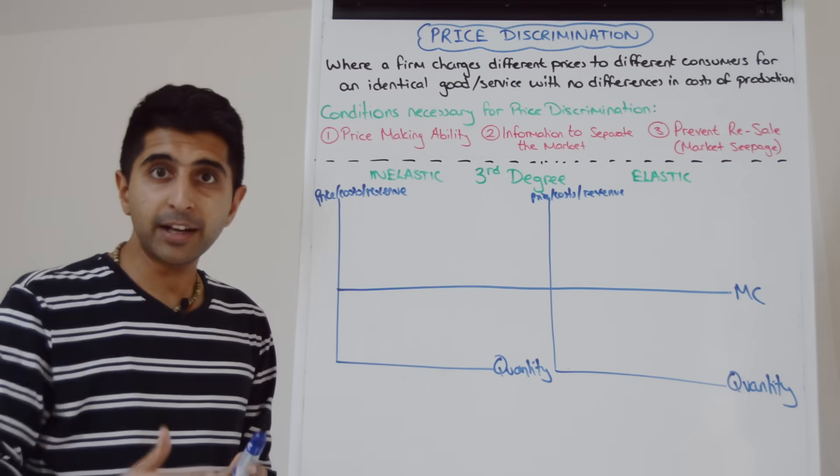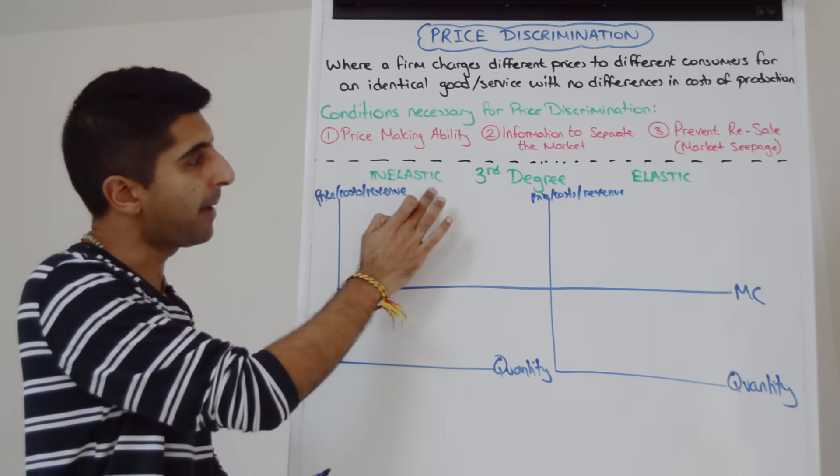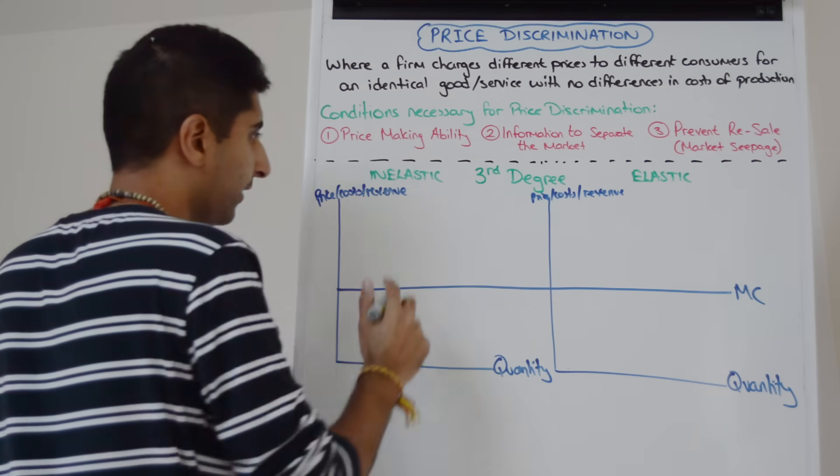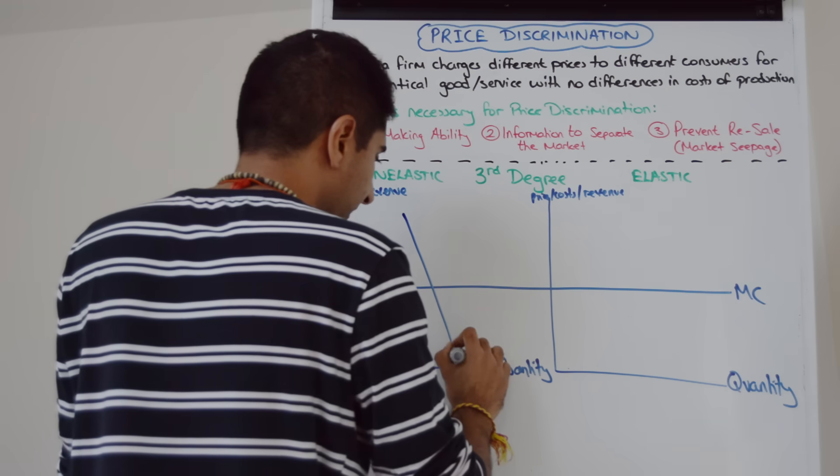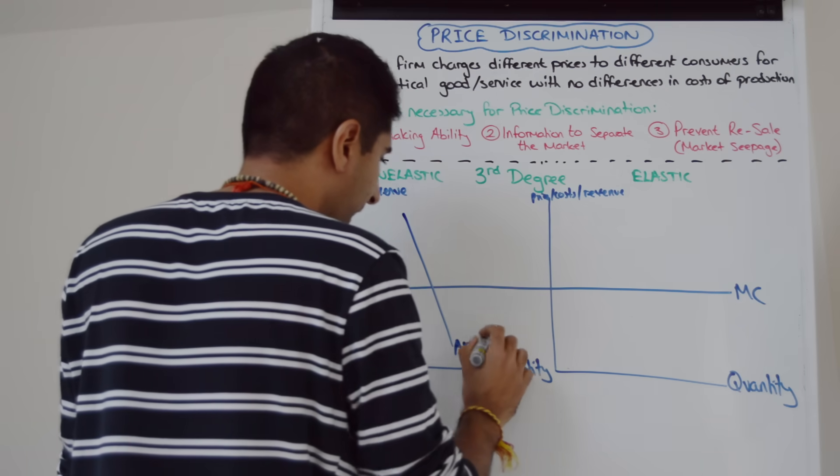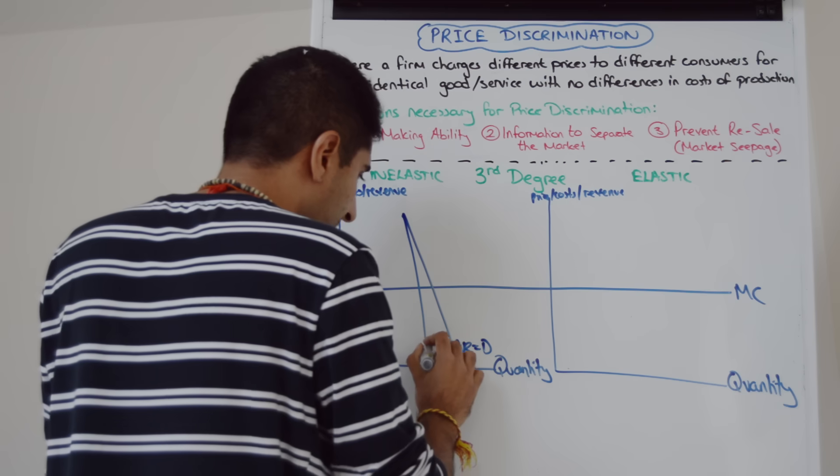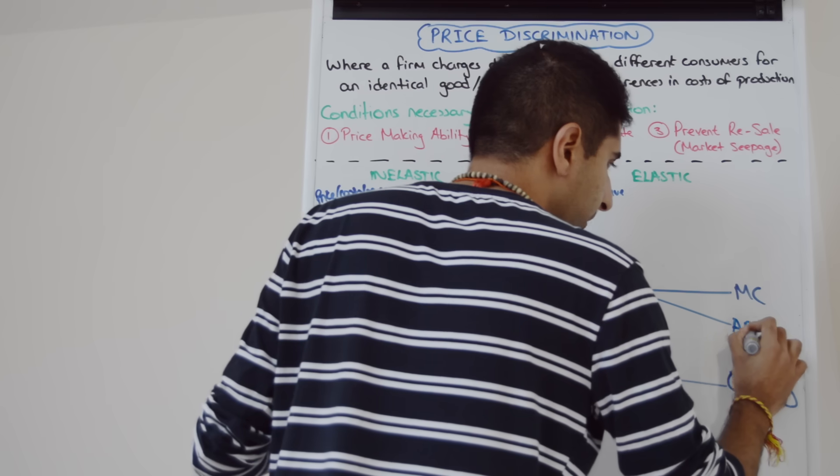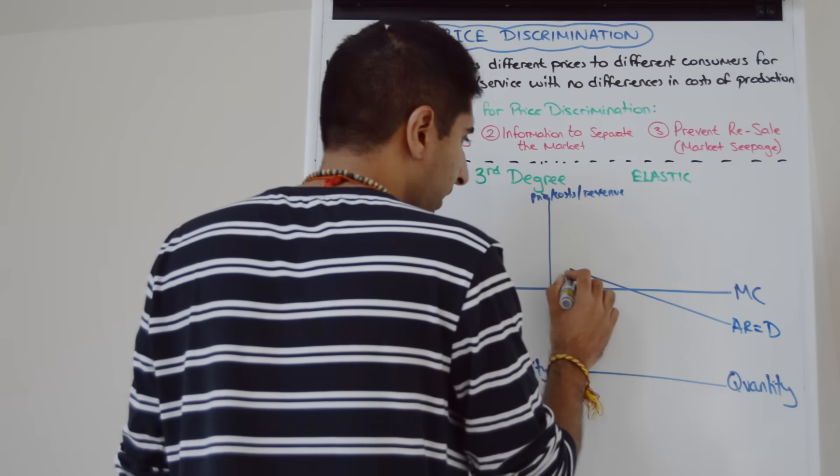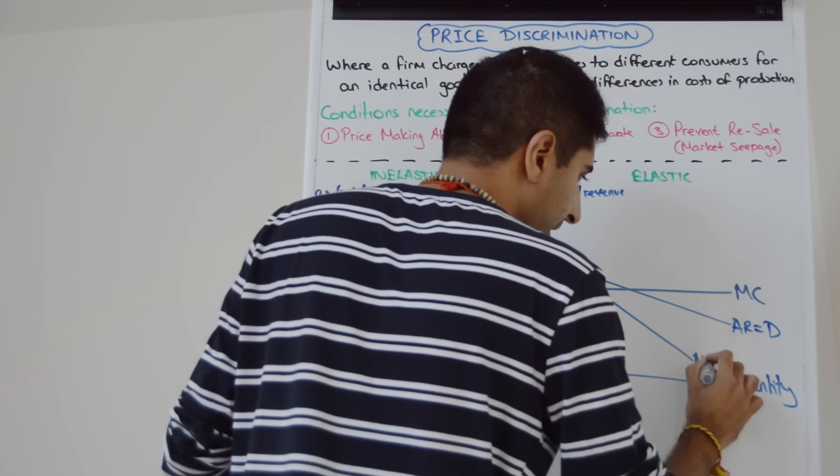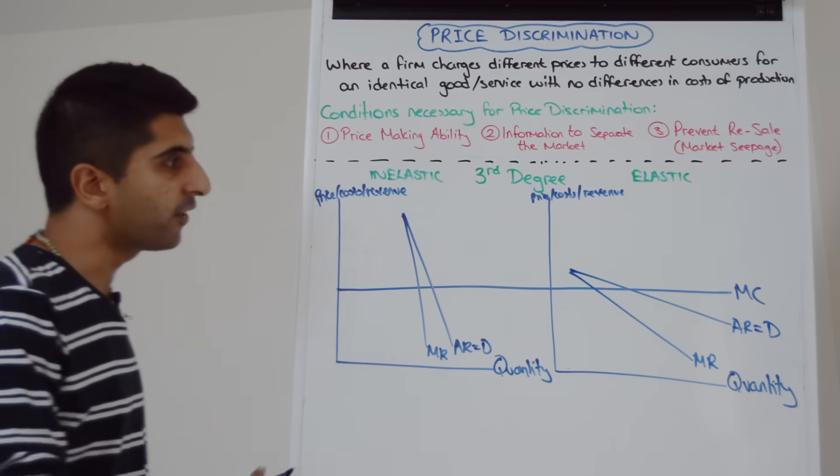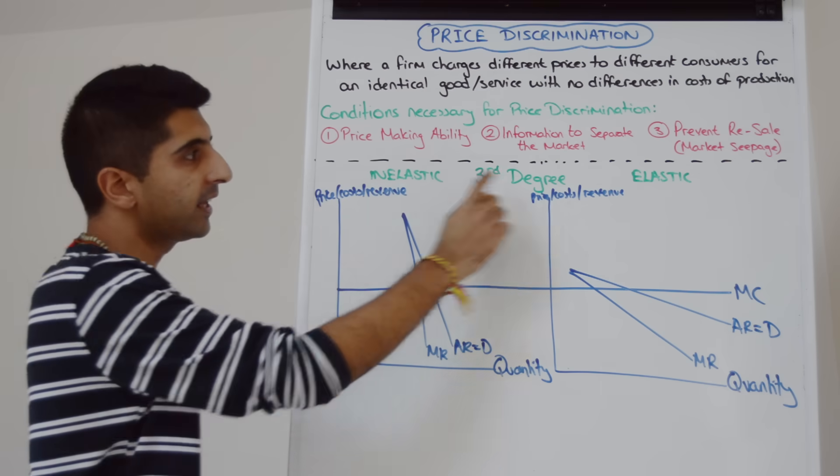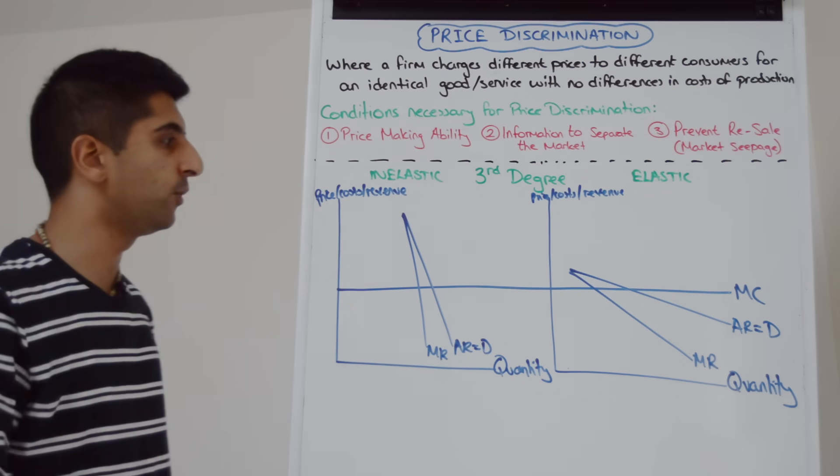Right, we need to draw revenue curves. Well our demand curve, our AR curve, if demand is price inelastic, is going to be quite steep, whereas here it's going to be more shallow. So let's make that clear. Let's say demand is going to look something like that. So there's AR, which is demand. MR is going to be twice as steep as that. And over here, much more shallow. So let's say AR is equal to demand, looks something like that. And MR, twice as steep, something like that. So there's the different price elasticities of demand. Here the peak consumers and here the off-peak consumers when it comes to using rail.